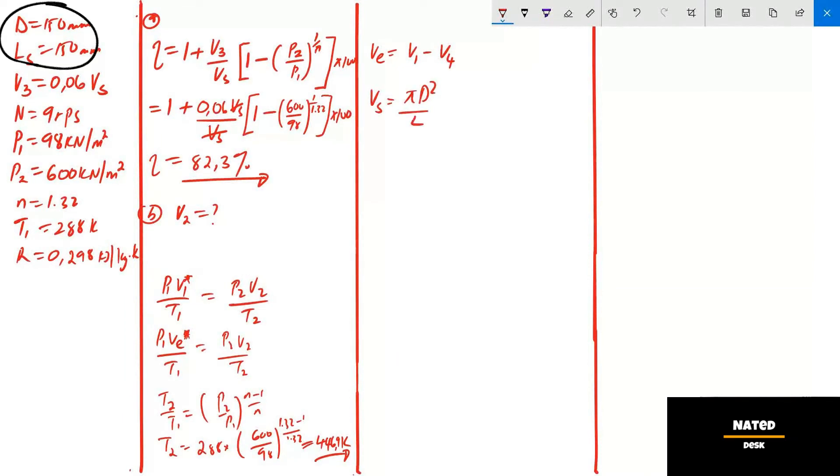Let's calculate Vs first using the diameter and stroke length LS. Vs equals pi multiply by 0.15 squared for the diameter, divide by 4, all multiply by 0.15. Therefore Vs is 2.651 times 10 to the exponent negative 3 cubic meter.